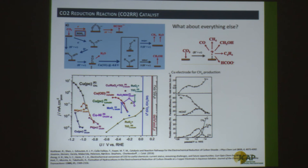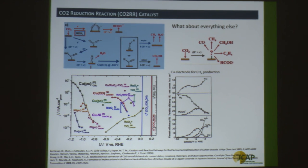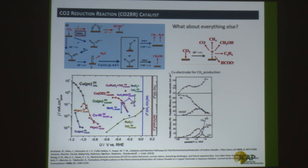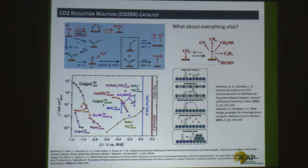What about everything else? For one-carbon products such as methane or methanol, we don't know how to make them very well. Copper electrodes studied decades ago are still among the state-of-art catalysts for CO2-to-methane conversion, requiring over a volt of overpotential with low Faradaic efficiency. There is increased interest in both JCAP and the broader community to design materials and strategies to produce CO2 to liquid fuels beyond CO and formate more selectively and efficiently — this is one of the key bottlenecks.